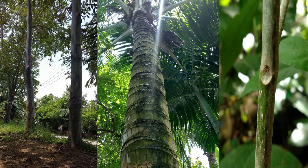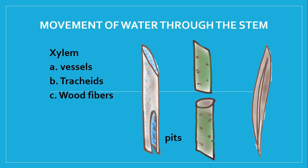Besides mechanical support, another function of the stem is the conduction of substances. Water travels from the roots to the stem and leaves through the xylem. There are three parts of the xylem: the first is vessels, the second is tracheids, and the third is wood fibers. Vessels are open-ended, thick-walled hollow cells arranged one on top of the other to form a continuous column.